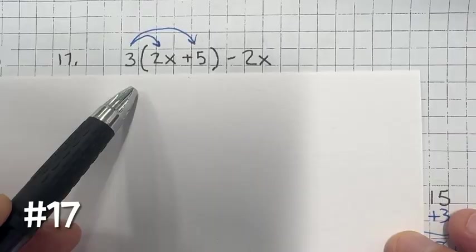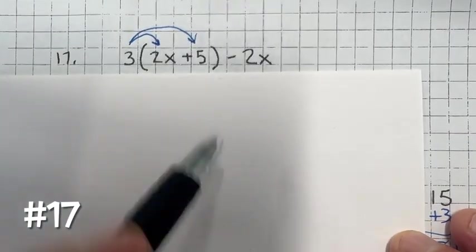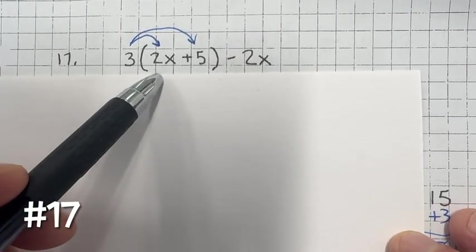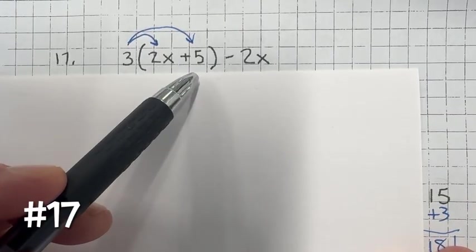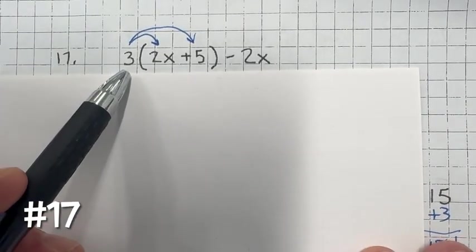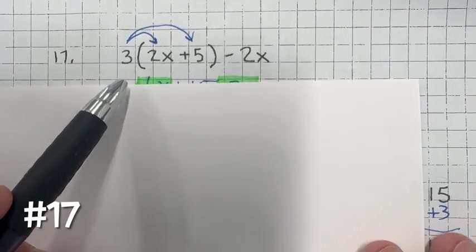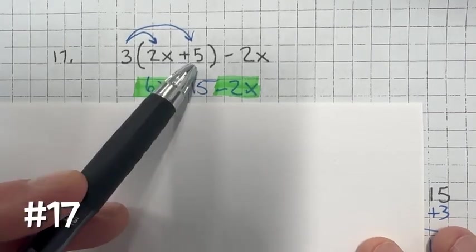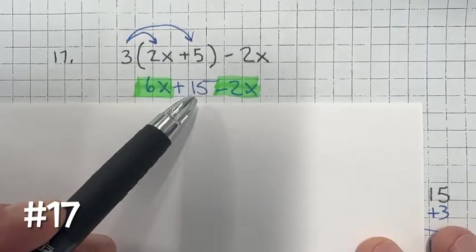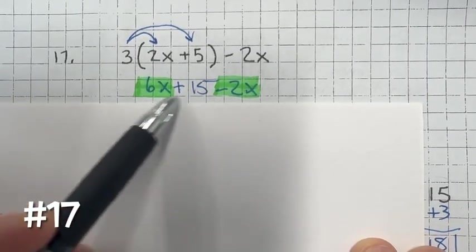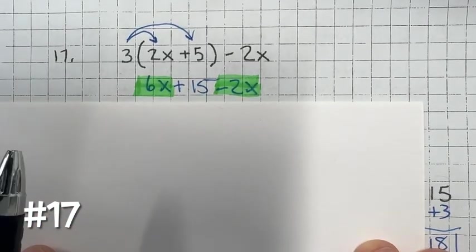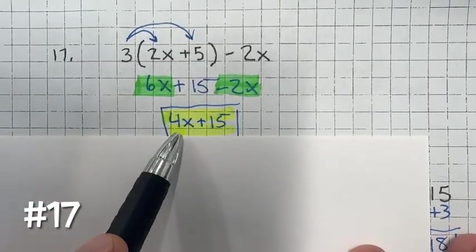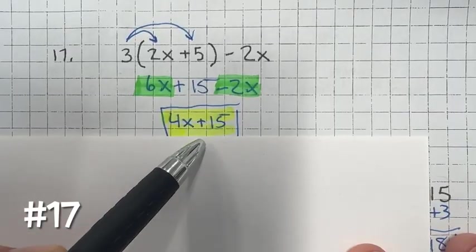Number 17: simplify this expression using the order of operations. We have parentheses but cannot simplify them because the terms are not like terms — we can't add x's and units. So we use the distributive property: 3 times 2x is 6x, and 3 times positive 5 is 15. Bringing down the negative 2x, we combine like terms: 6x minus 2x is 4x, giving us 4x plus 15.